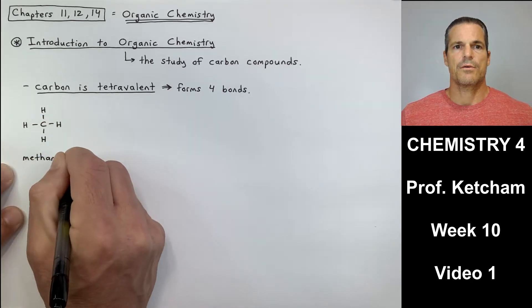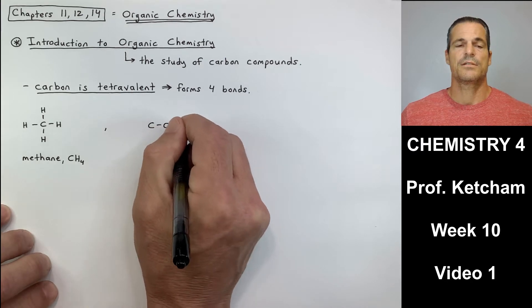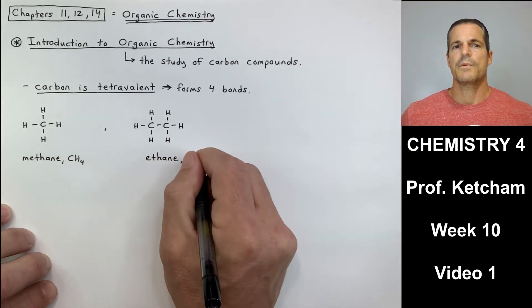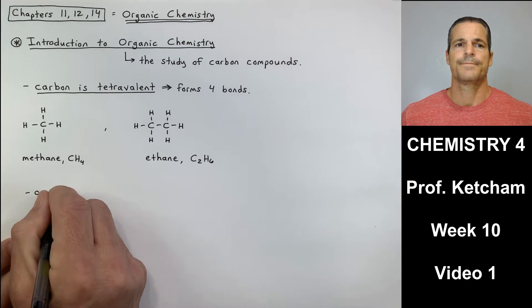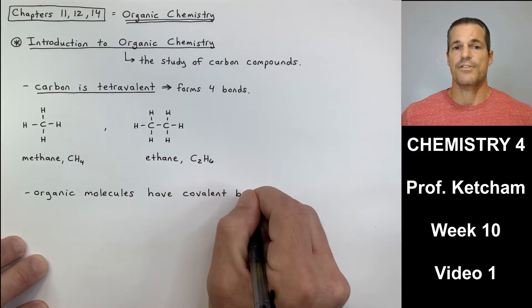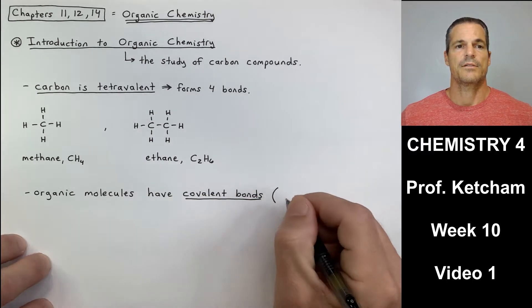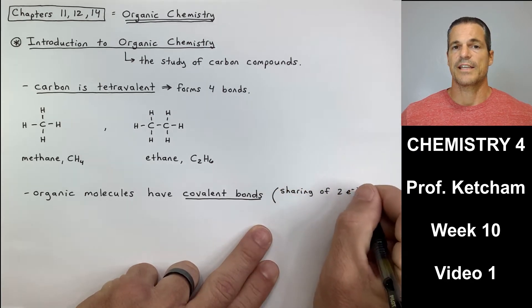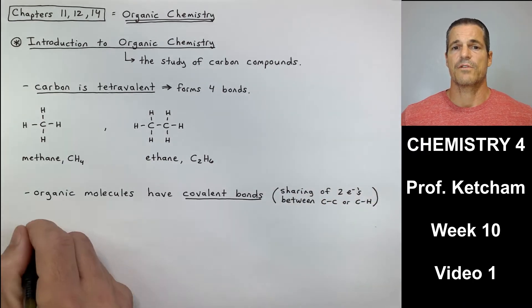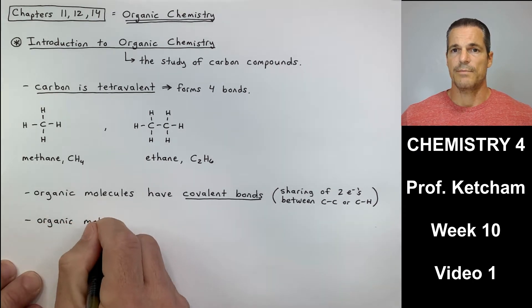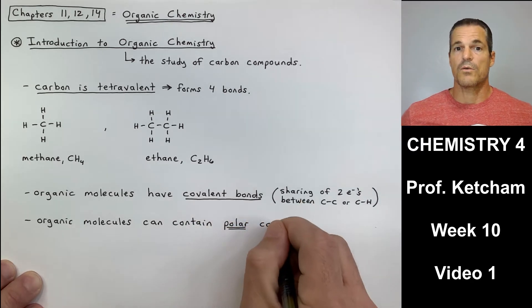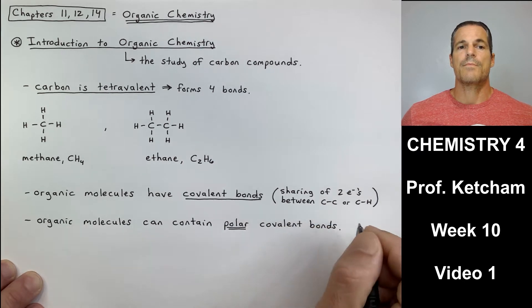Introduction to organic chemistry. Organic chemistry is the study of carbon compounds. Carbon is tetravalent — it likes to form four bonds. These two examples are methane, CH4, and ethane, C2H6. I've got the structures drawn out along with the condensed formulas. Organic molecules have covalent bonds — that shared electron pair, like a tug-of-war between two atoms.